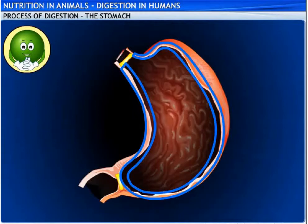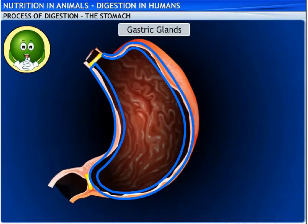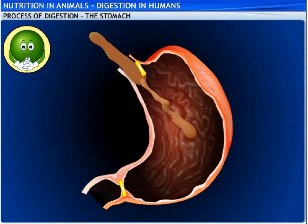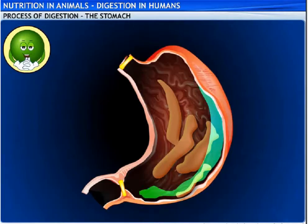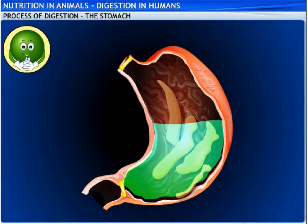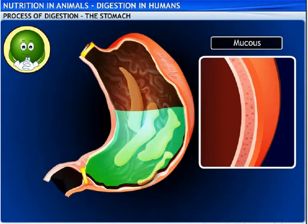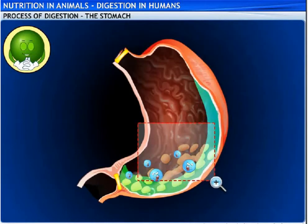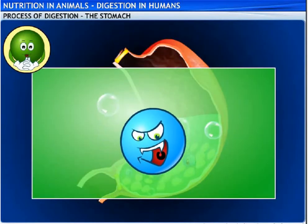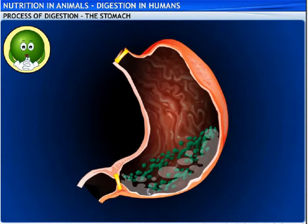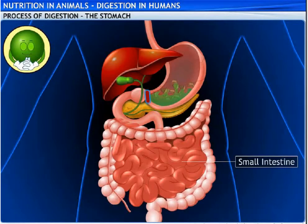The stomach walls are thick and highly muscular, with gastric glands on the inner wall that aid digestion with the help of hydrochloric acid, mucus, and digestive juices. Each of these juices has a specific function: the mucus protects the inner wall of the stomach; the acids kill bacteria and create an acidic medium that helps in digestion of proteins; and the digestive juices break proteins into simpler substances known as amino acids. This is then passed into the small intestine.